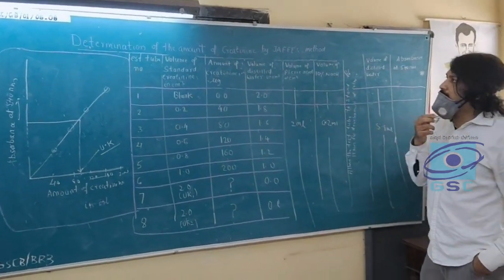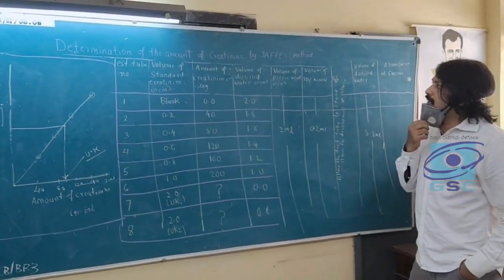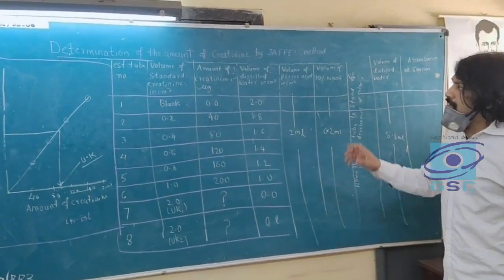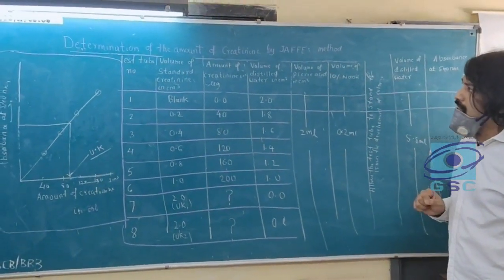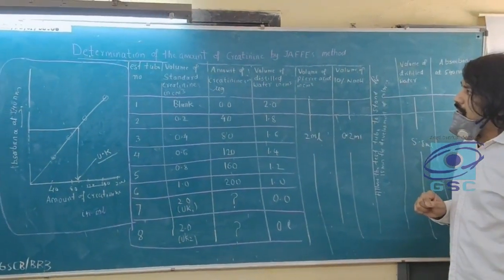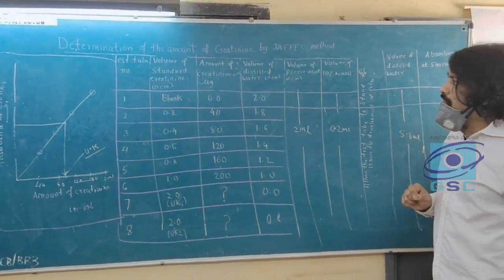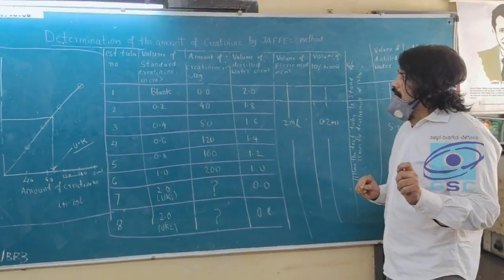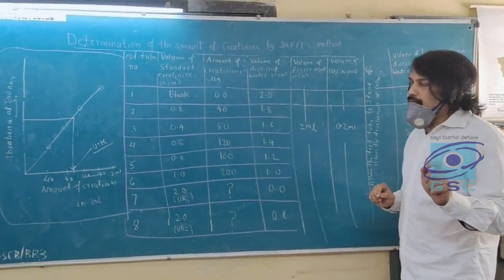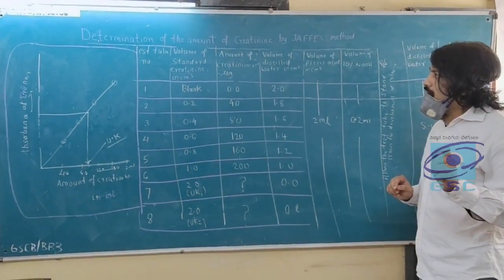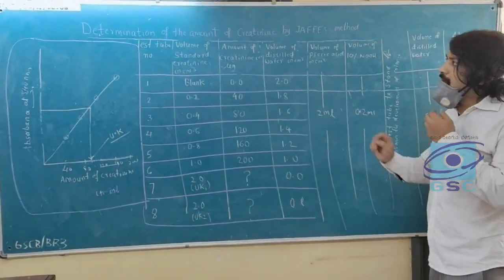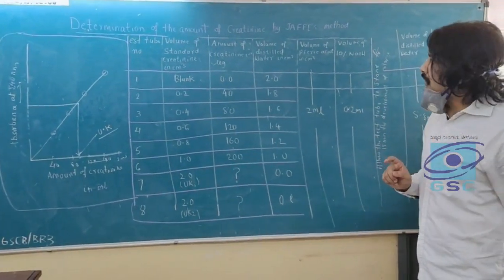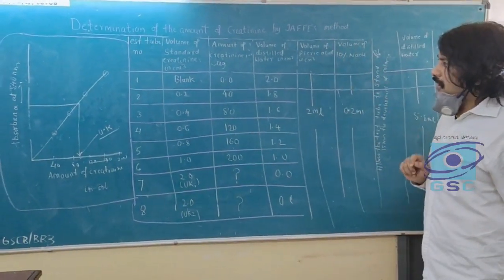Today we are estimating the amount of creatinine by Jaffe's method. Creatinine is the product of nitrogen metabolism, formed by three main amino acids: glycine, arginine, and methionine. Methionine is the methyl group donor in the formation of creatinine.